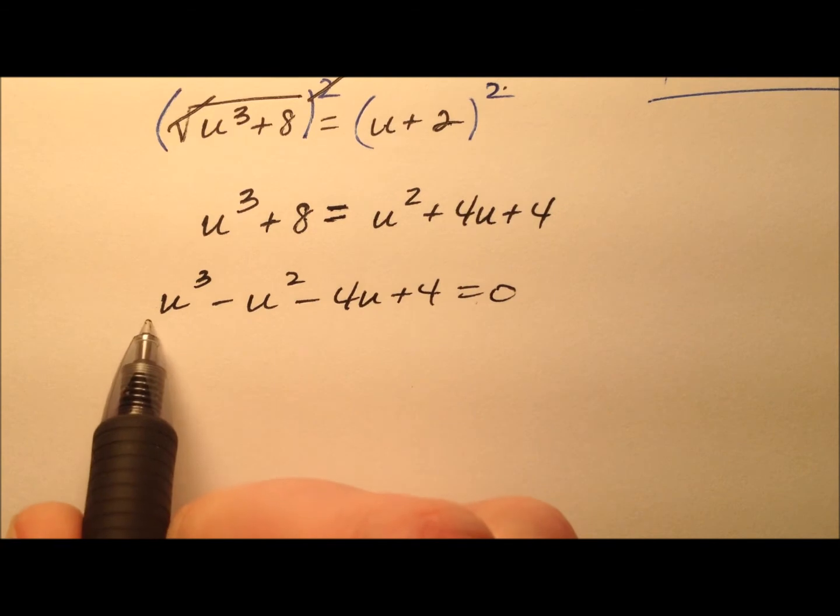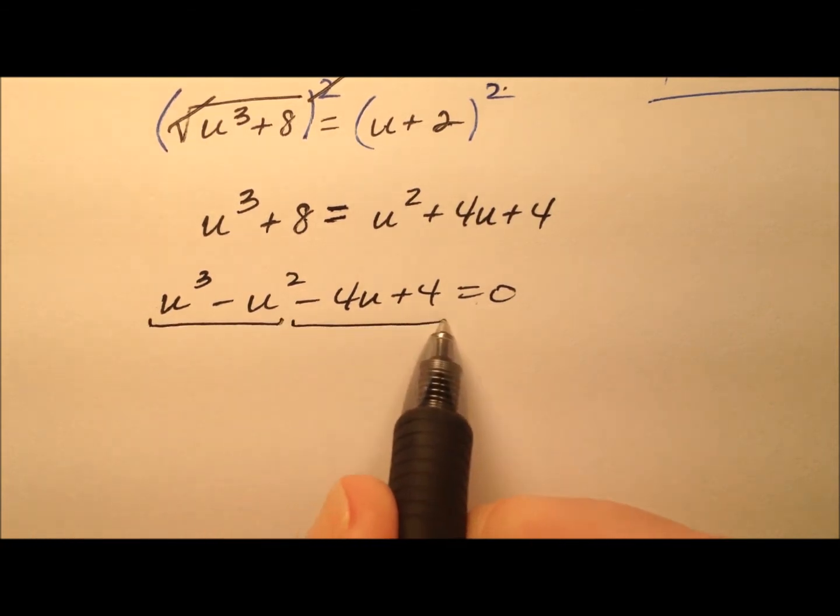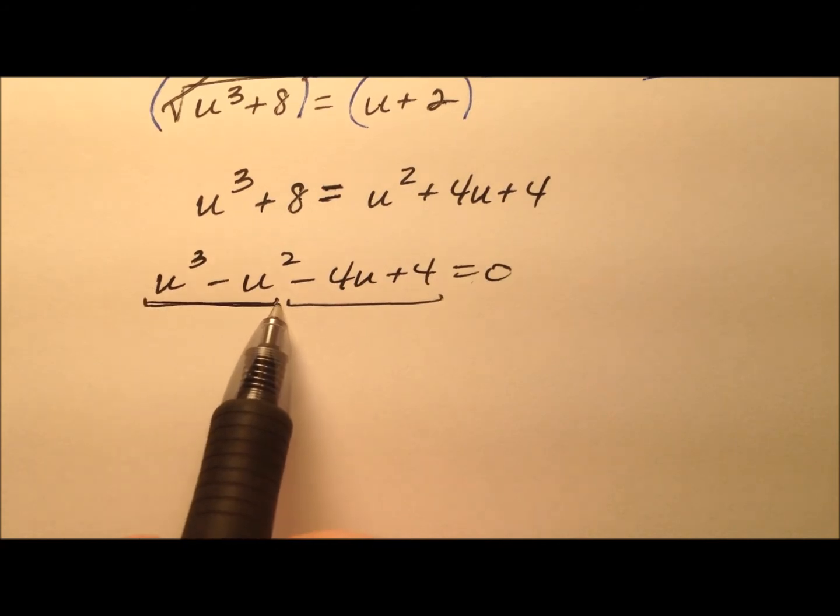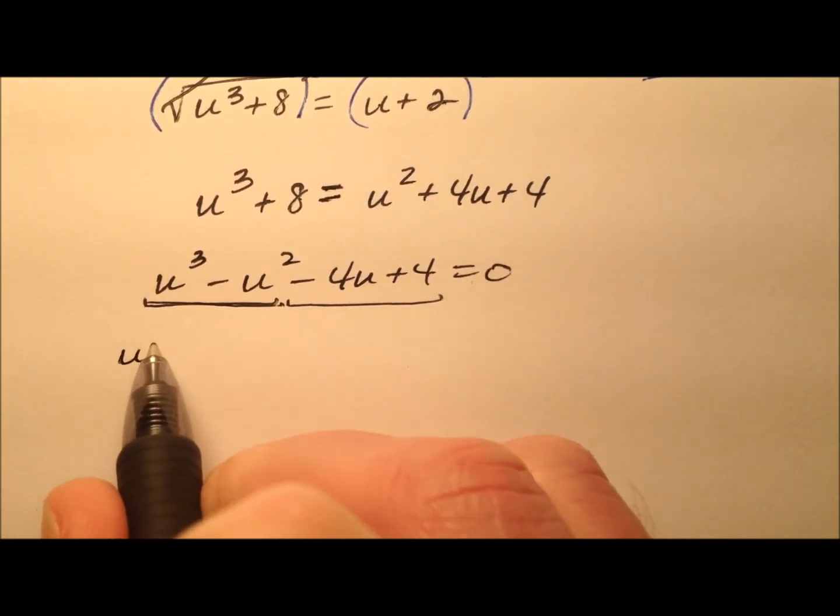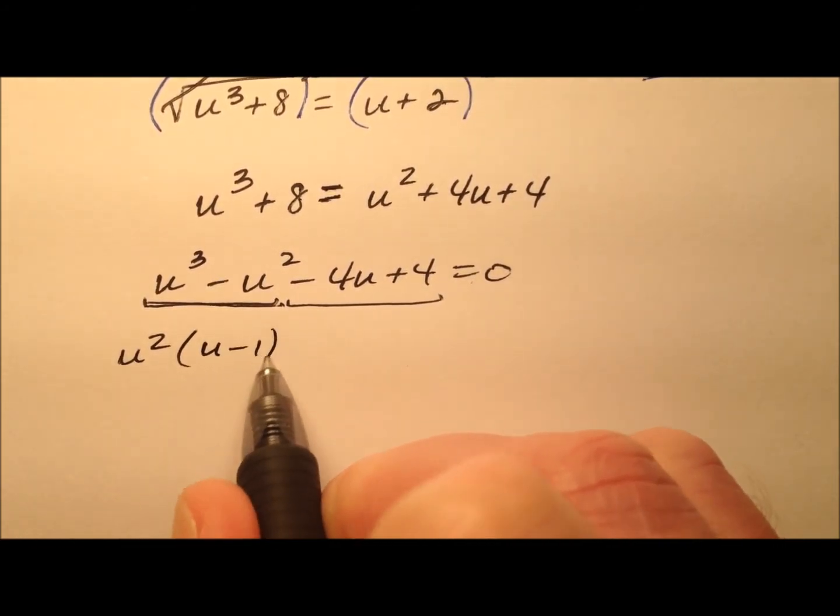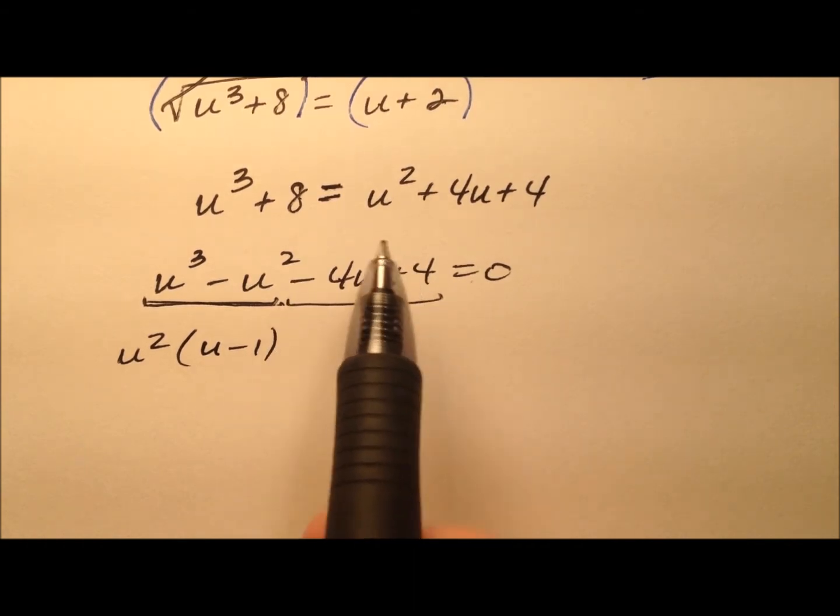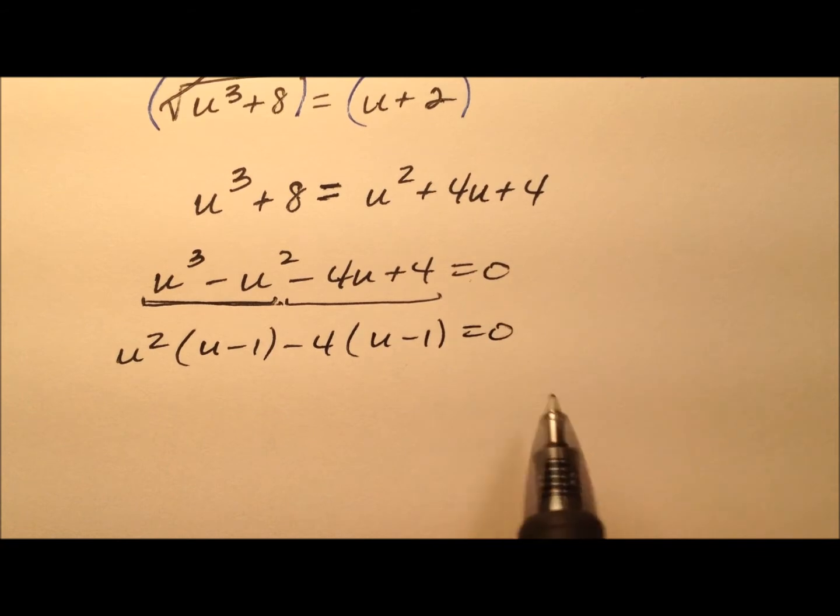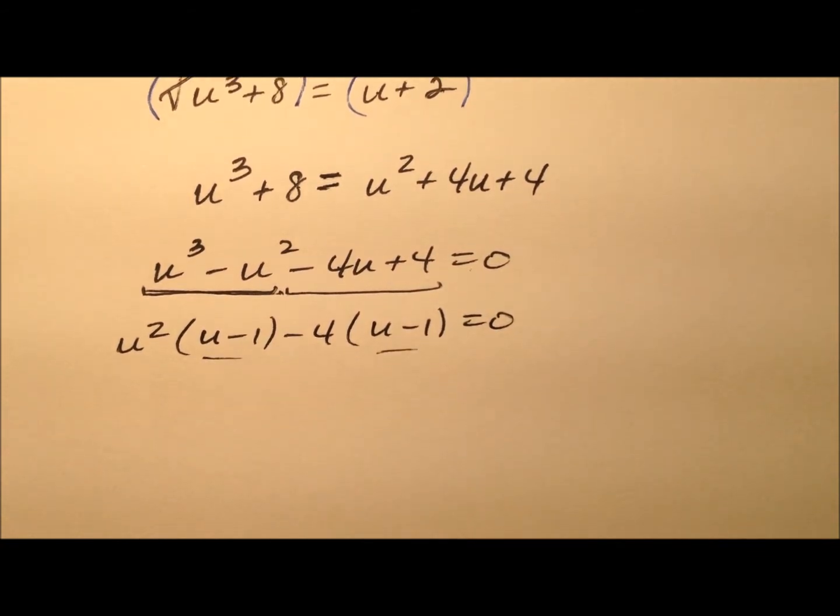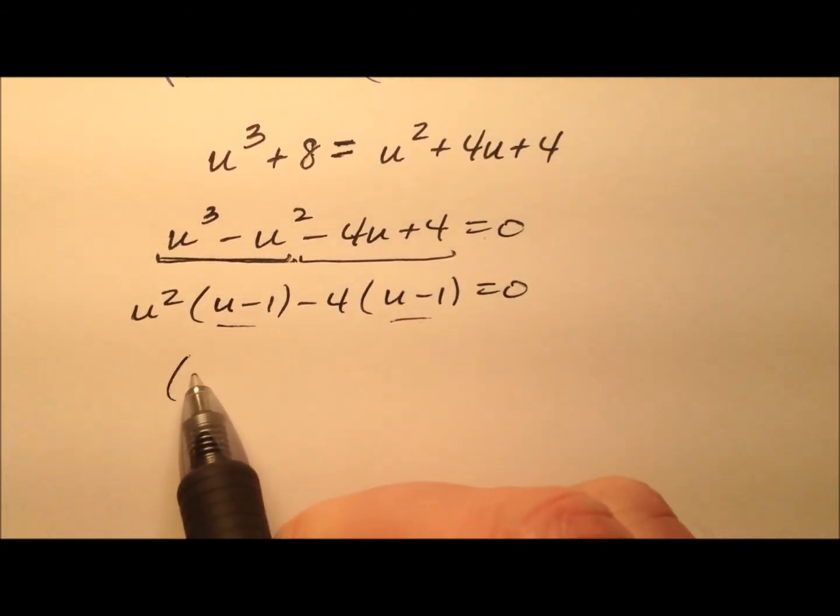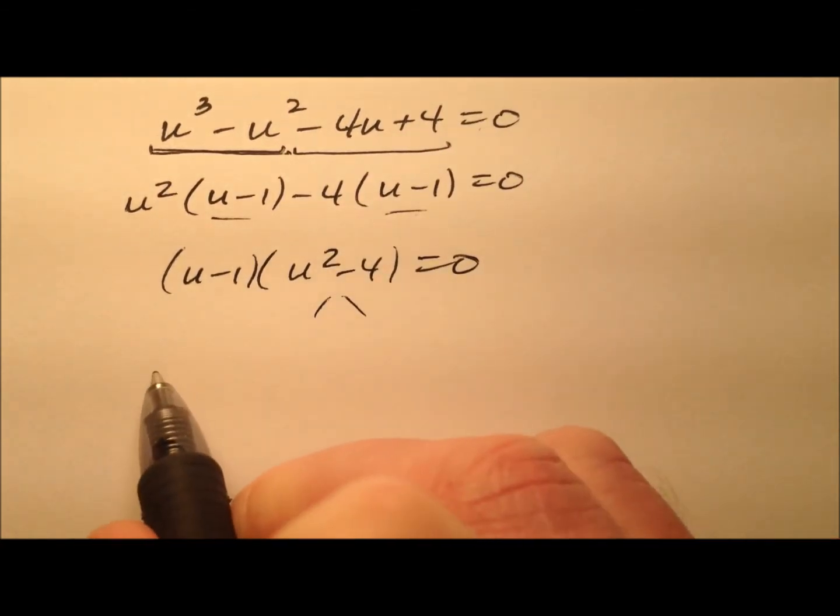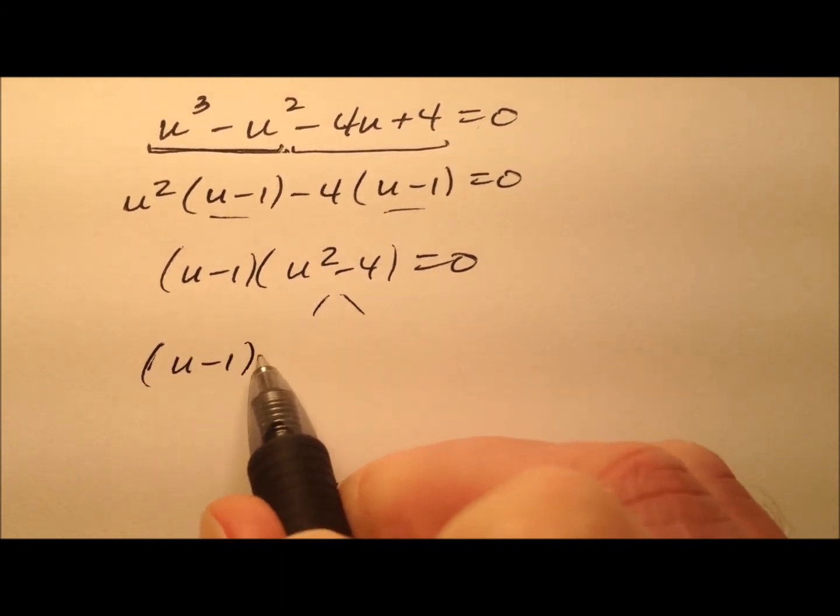And it also appears here that factor by grouping is going to work really well to factor this. So out of this first pair, let's factor a u squared out, and we'll have u minus 1. And out of the second pair, let's factor a minus 4 out, so we'll have u minus 1 again. These leftovers are the same, so I can factor that out. And I have the u squared minus 4, which is a difference of squares, so this just factored really, really nicely.